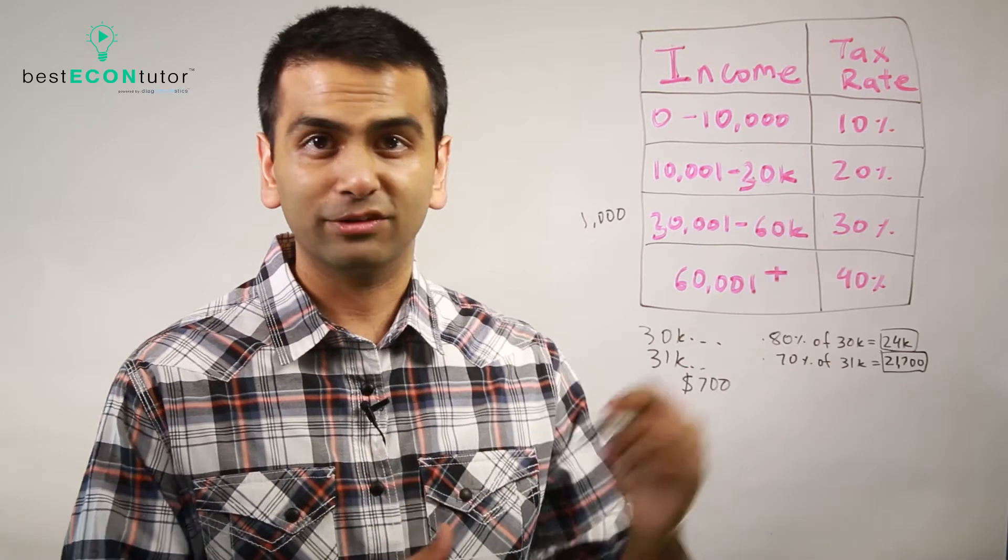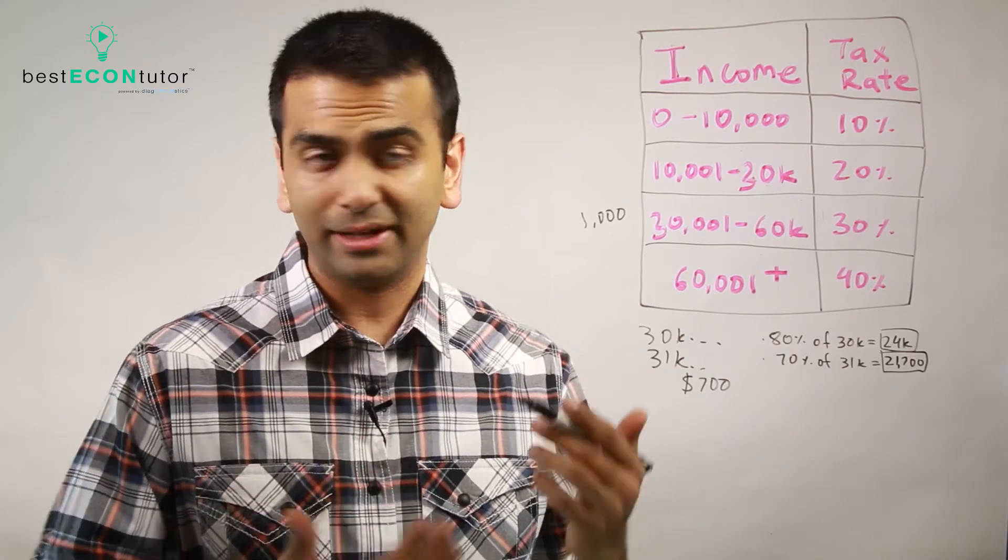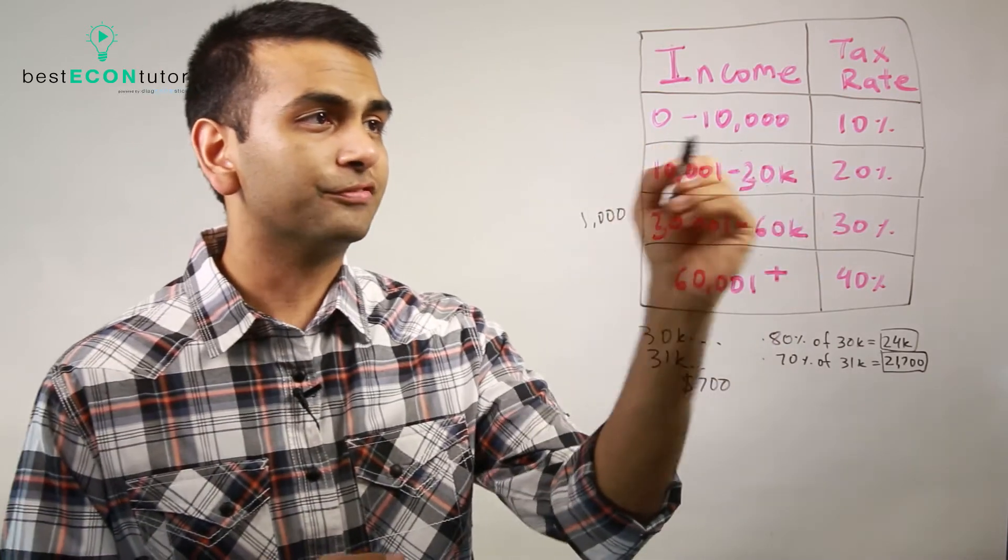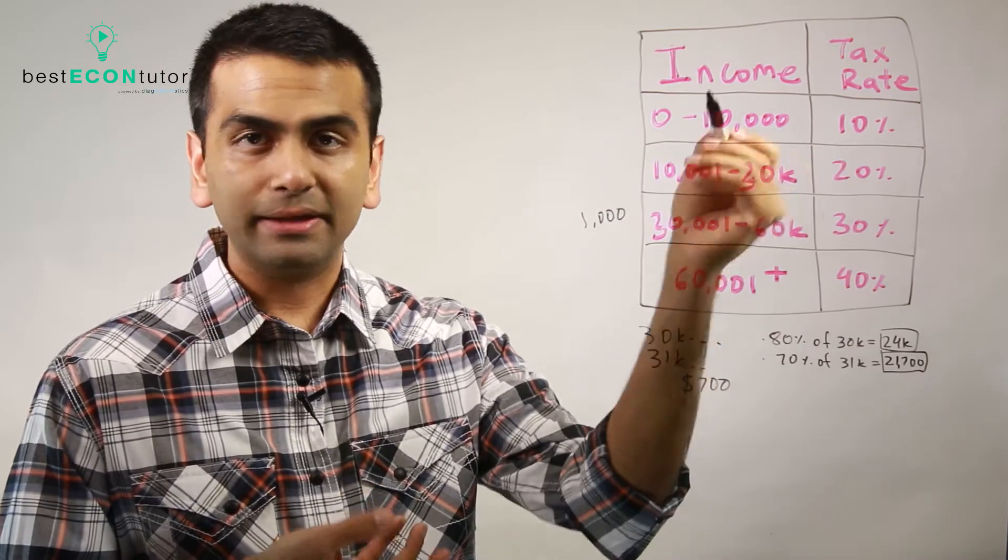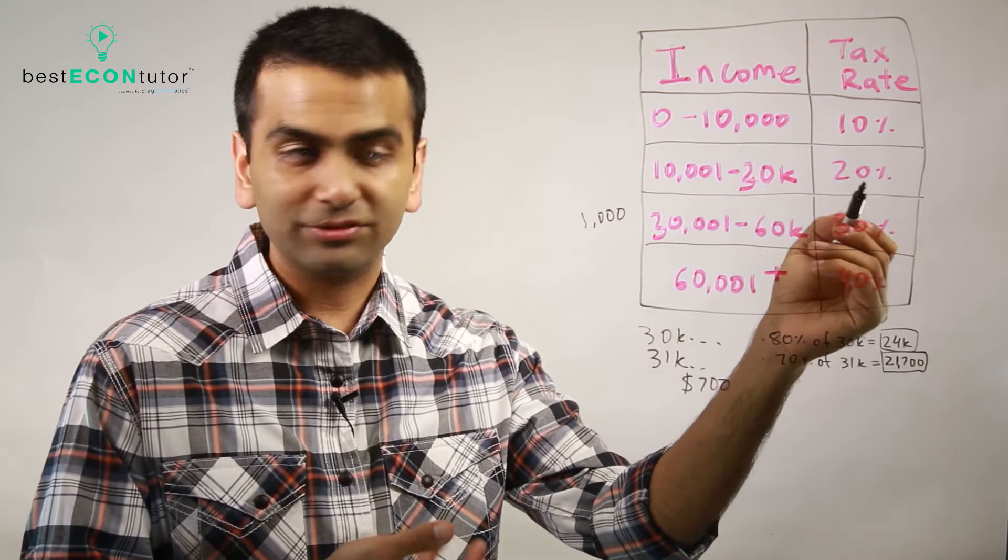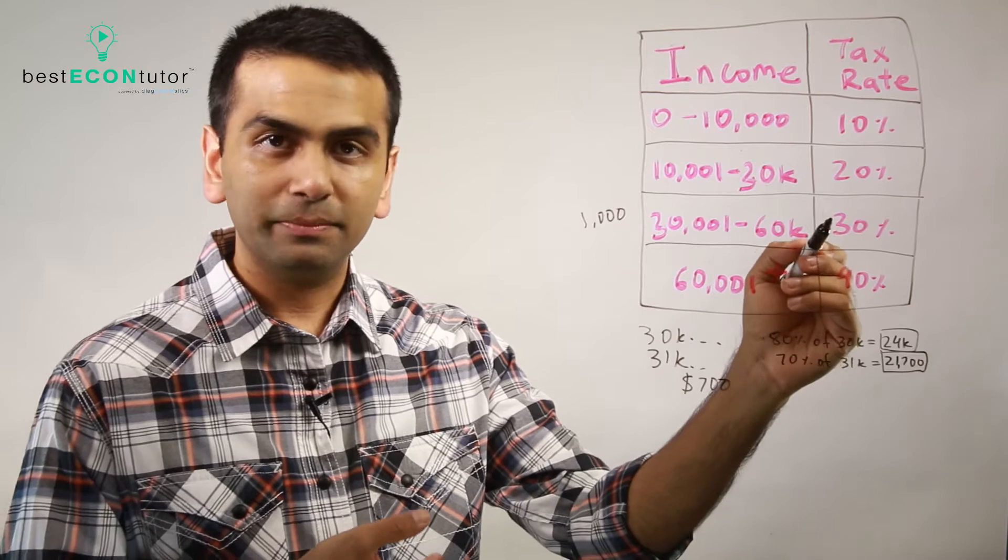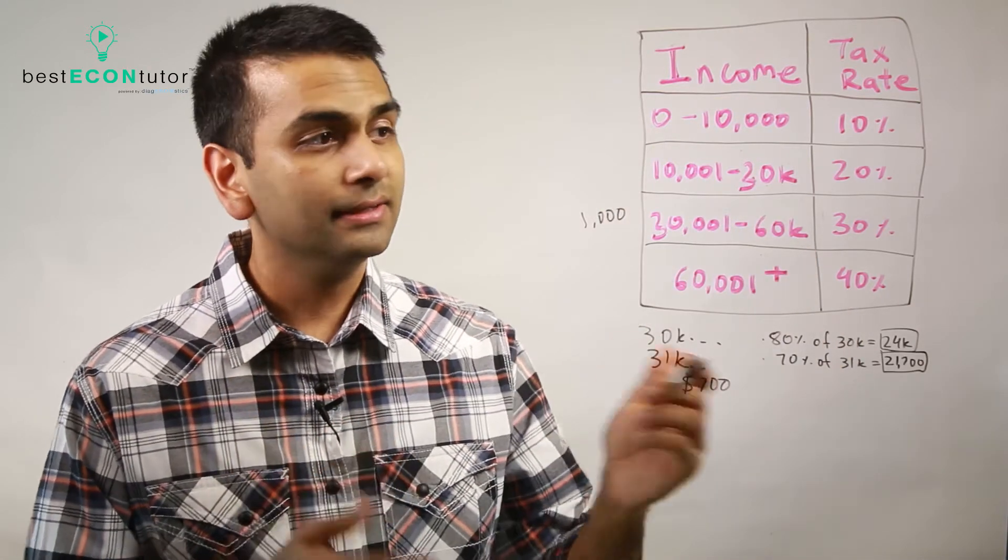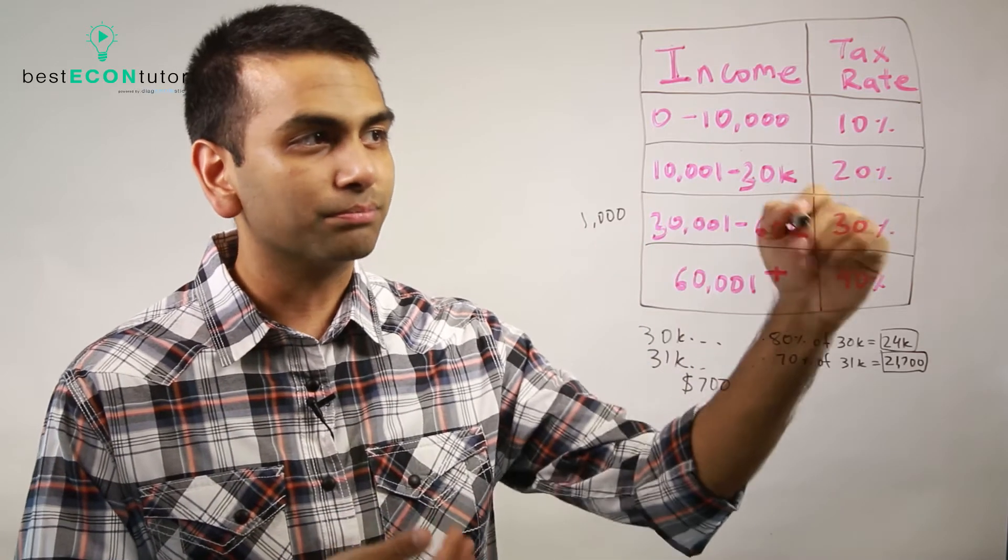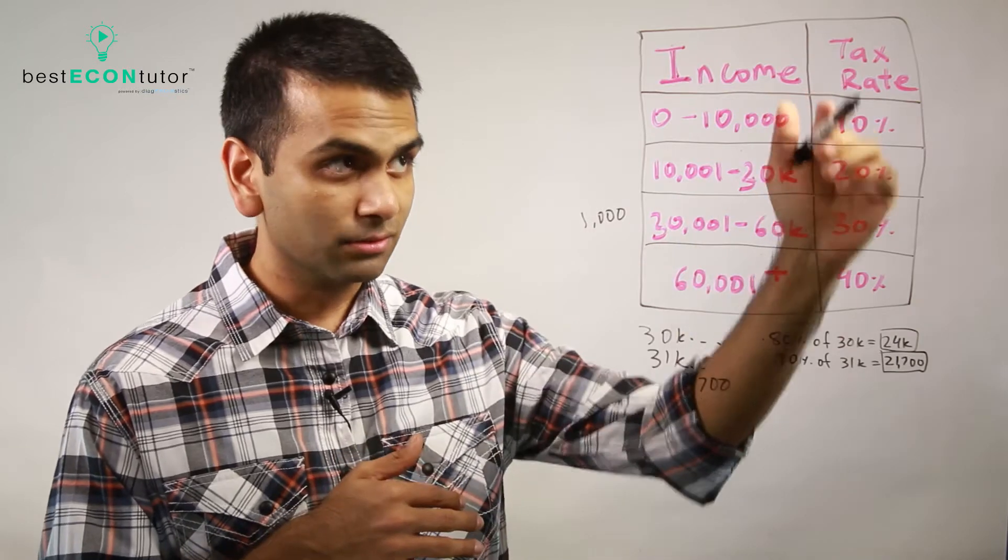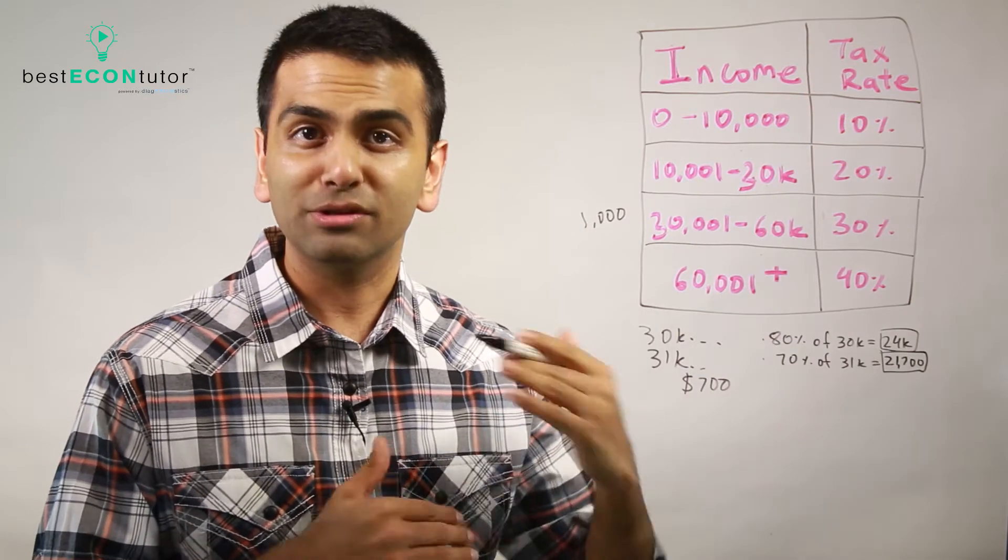Now, this is, again, the marginal tax rate. So if you want to find the average tax rate, you just have to look at if you made $31,000, you'd say, all right, for the first $10,000, you paid 10%, and then for this next $20,000, you paid 20%, and for that last $1,000, you paid 30%. So you'd do the weighted average of those. Most econ classes won't really have you calculate it, but that's how you do it. It's going to be somewhere in between there, but that's the average. But what you're given in the brackets is usually just the marginal.